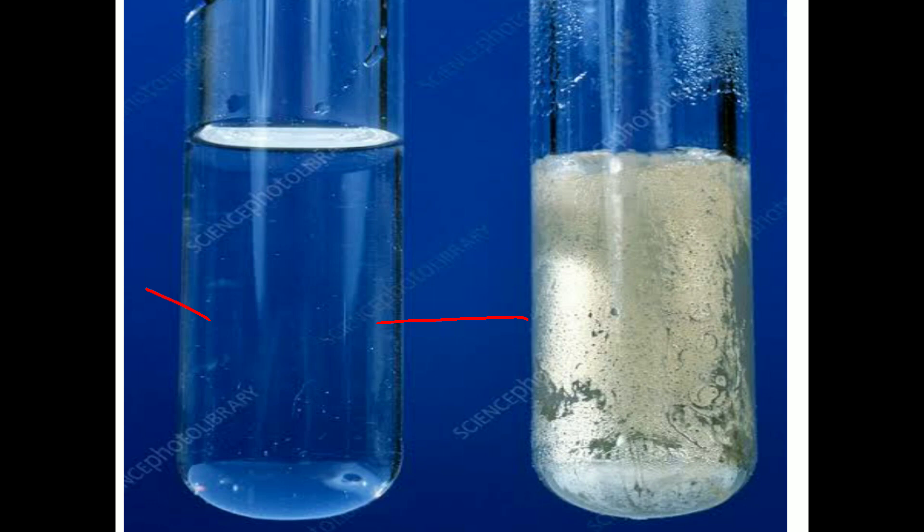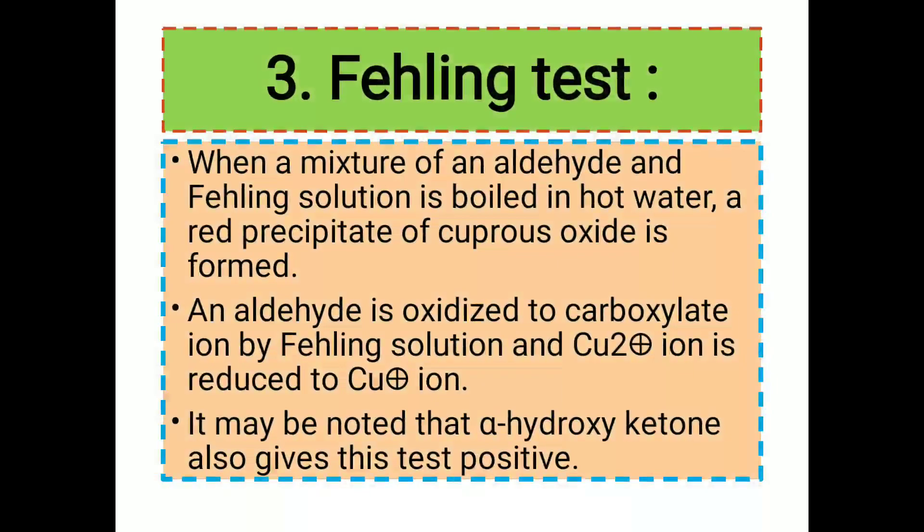When the aldehyde is tested with Tollens reagent and a silver mirror is deposited on the inner walls of the test tube, this confirms that the compound contains an aldehyde group. The formation of the silver mirror is a positive result for the Tollens test.